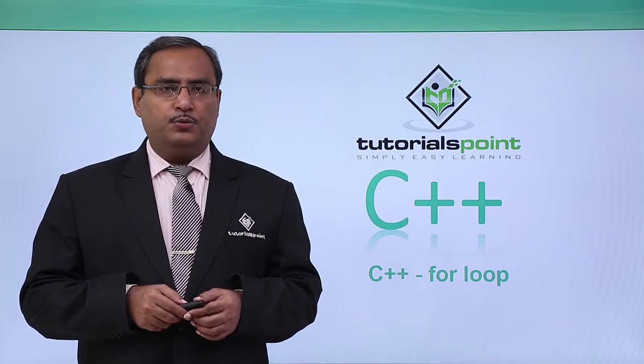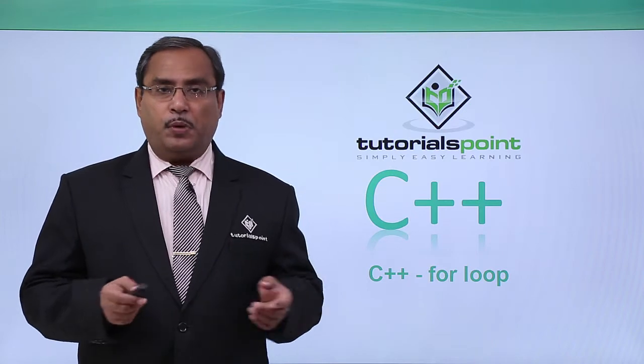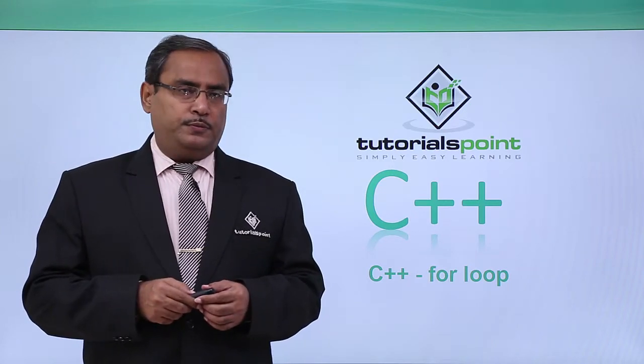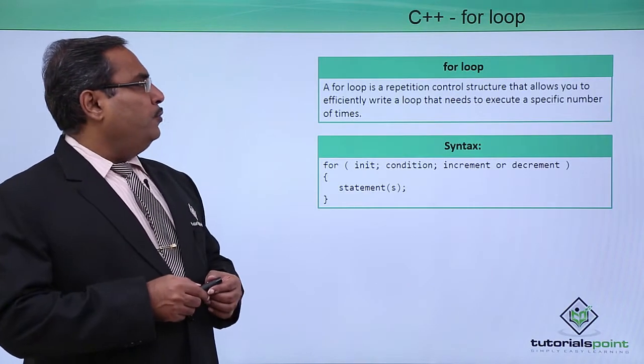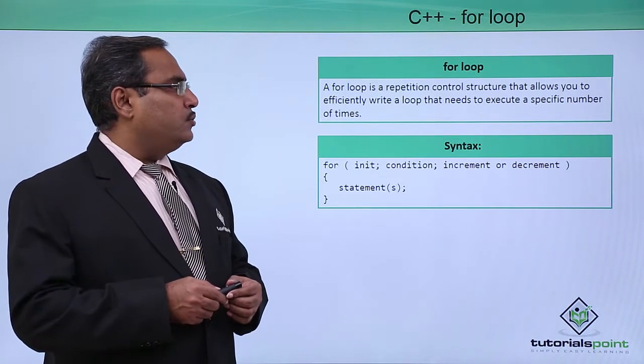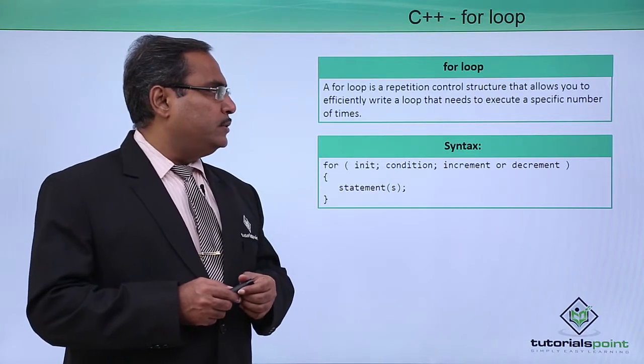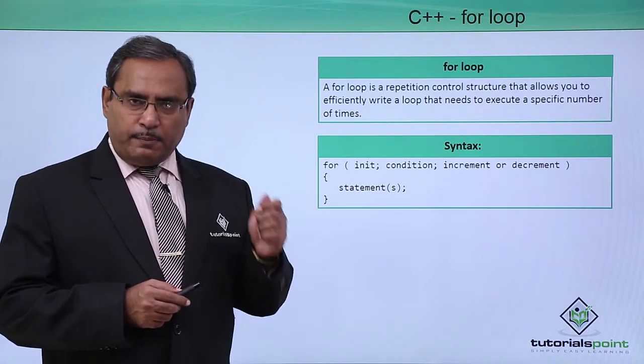C++ for loop. That is another looping construct which is very popular, the for loop. A for loop is a repetition control structure that allows you to efficiently write a loop that needs to execute a specific number of times.